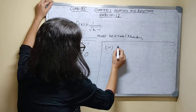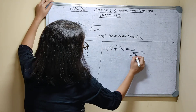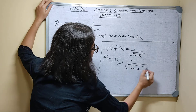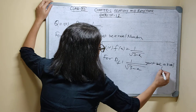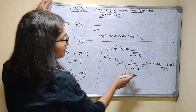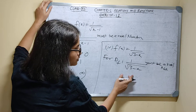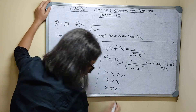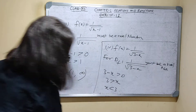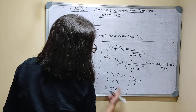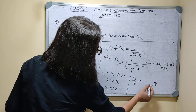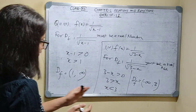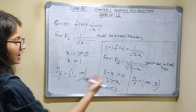Fourth part: f(x) is equal to 1 upon root of 3 minus x. For domain of a function, f(x) must be a real number, so 1 upon root of 3 minus x must be a real number. Since it is in the denominator, I can't take equal to 0, so 3 minus x must be greater than 0. Therefore 3 is greater than x, or x is less than 3. Domain of function is (-infinity, 3).